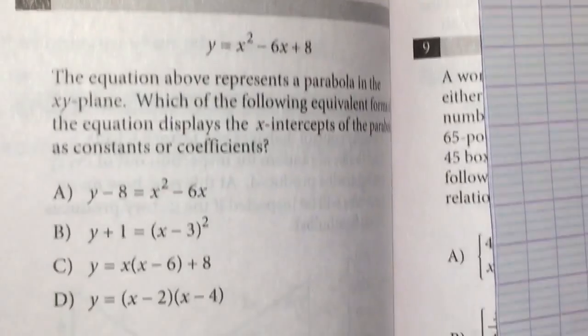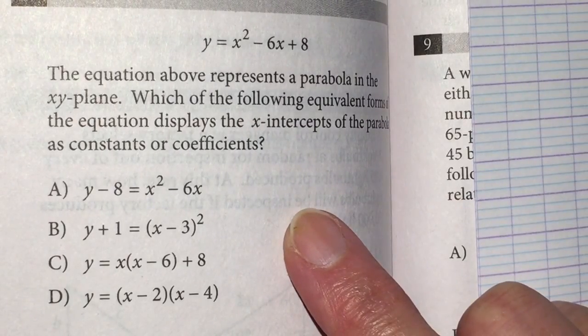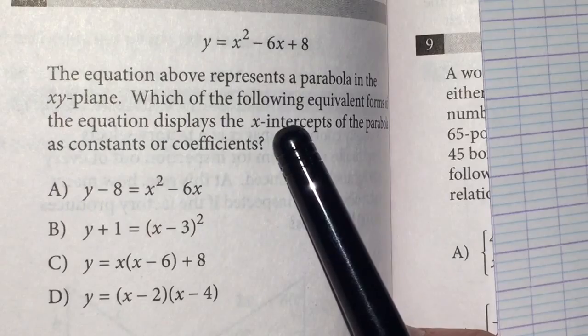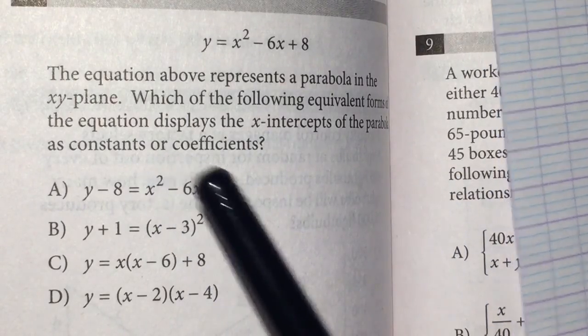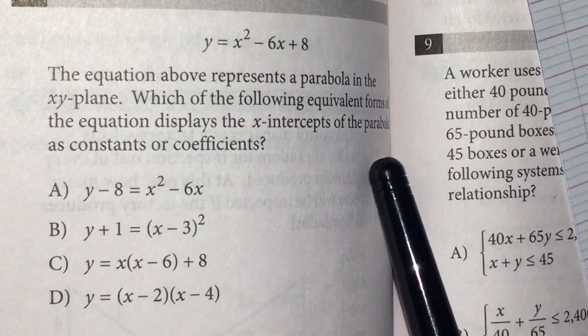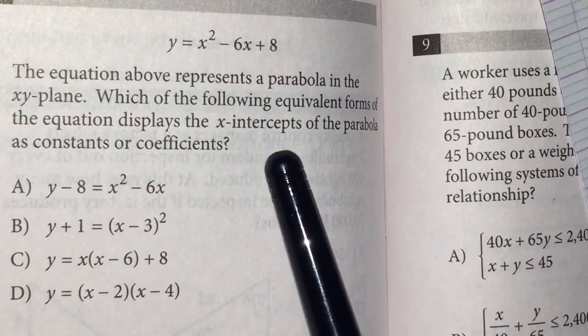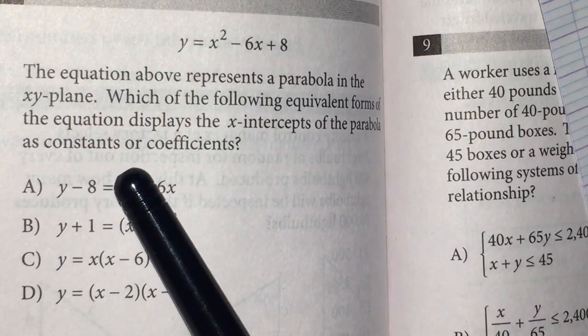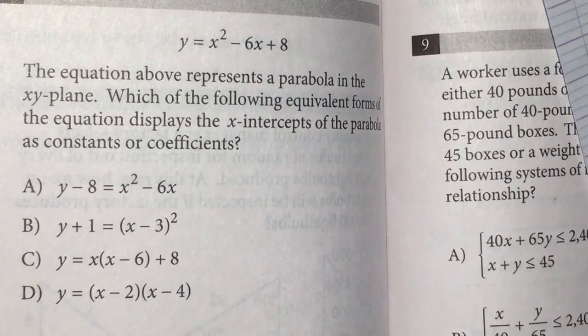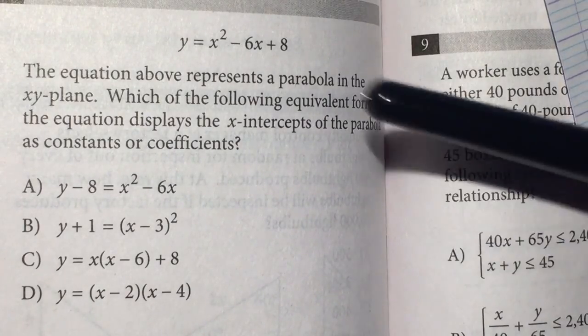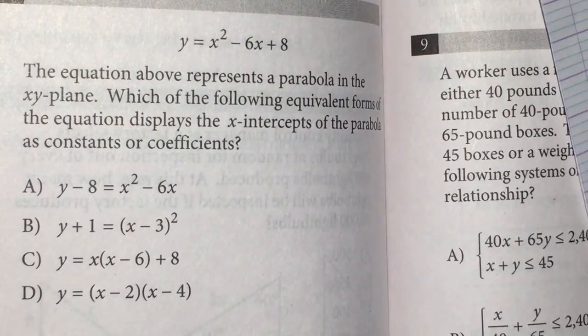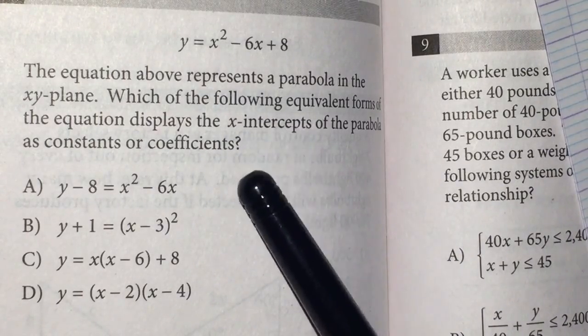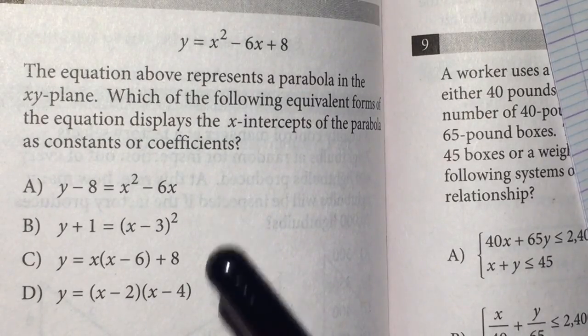Here is another problem. y equals x squared minus 6x plus 8. The equation above represents a parabola in the xy plane. Which of the following equivalent forms of the equation displays the x-intercepts of the parabola as constants or coefficients? The coefficient is 1. You already know. So do not worry about coefficient.